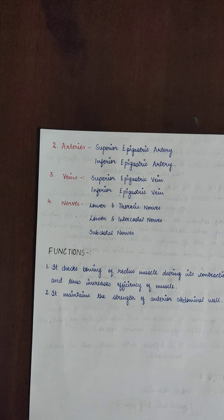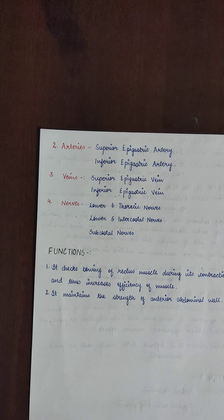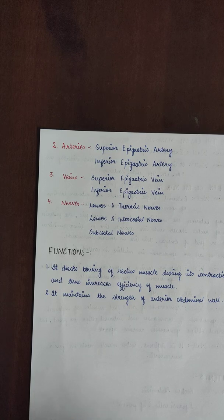What is the function of the rectus sheath? It checks bowing of the rectus muscle during its contraction and thus increases the efficiency of the muscle. It also maintains the strength of the anterior abdominal wall.